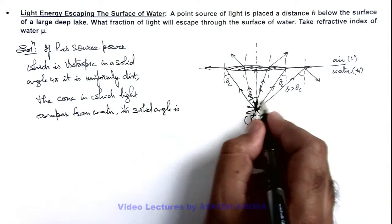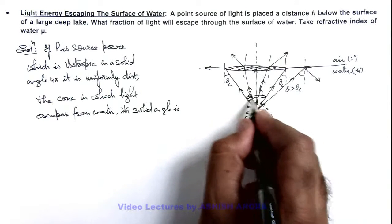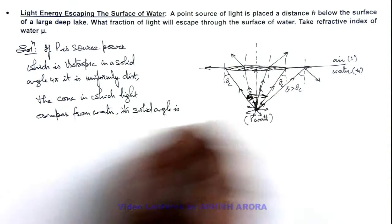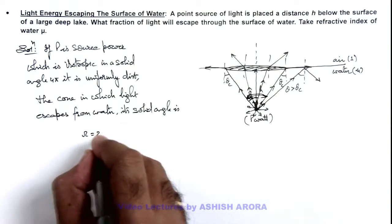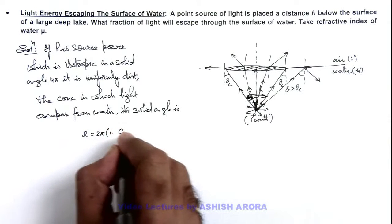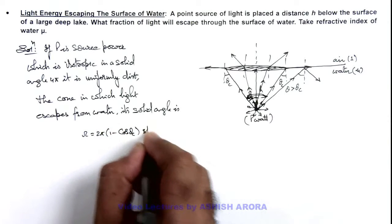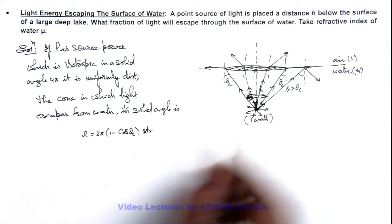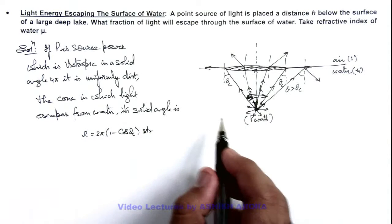2π(1 - cos θc) steradians, if θc is the half angle of this cone which we already discussed.